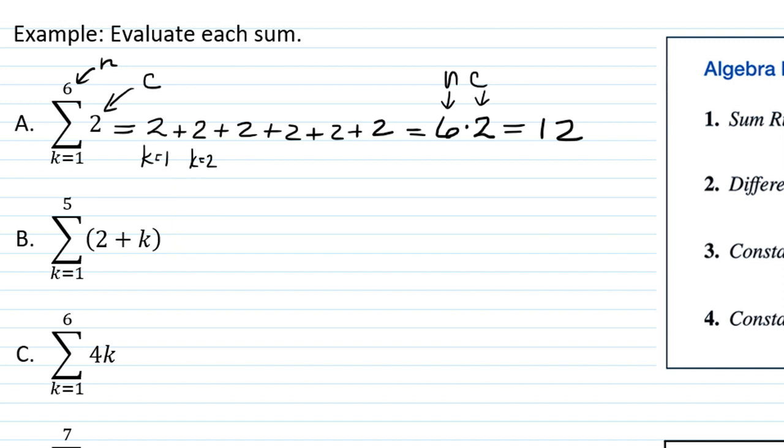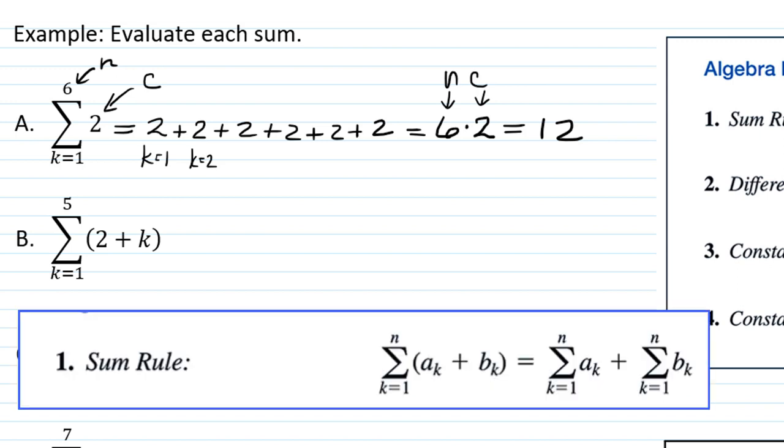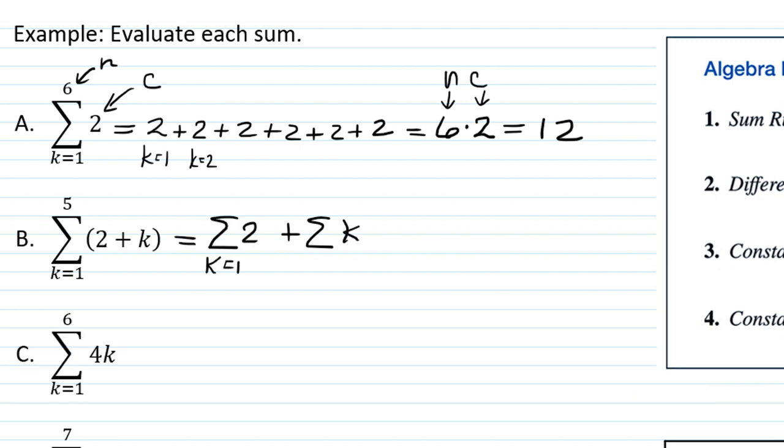Now let's look at part B. We have the sum k equals 1 to 5 of 2 plus k. When you have a sum within your summation, we can break it apart according to the sum rule, which makes sense because essentially just rearranging terms of a sum. So I'm going to add up all the 2s first, and then I'm going to add up all the k's, and then we'll add them together.